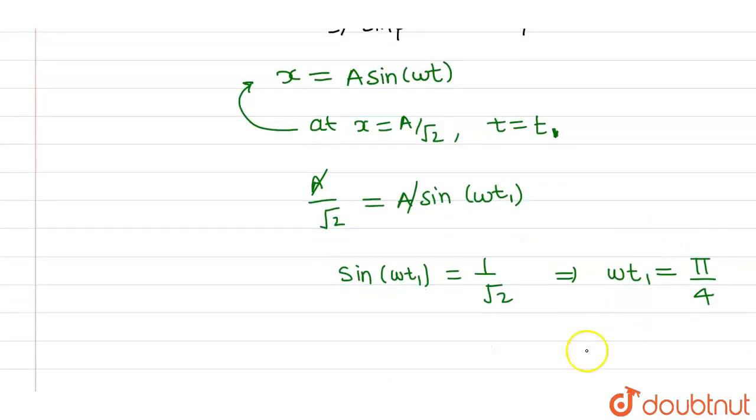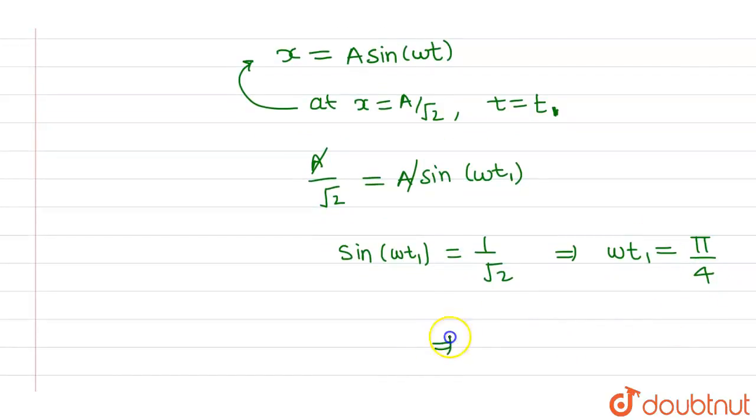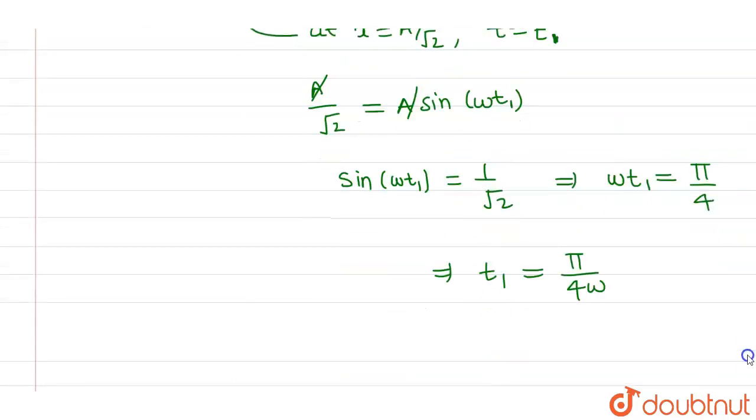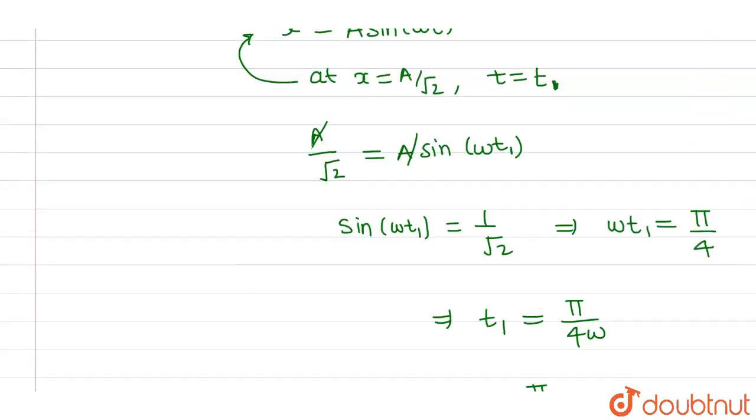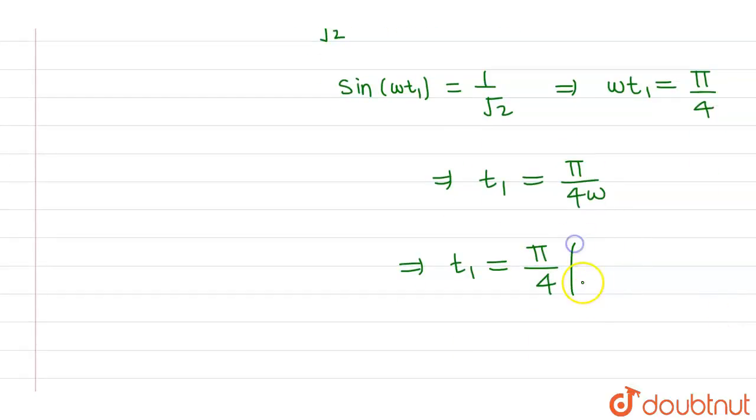So this will be equals to t1 equals pi by 4 omega. And the value of omega is 2 pi by T. So this will be equals to t1 equal to pi by 4 into 2 pi by T.